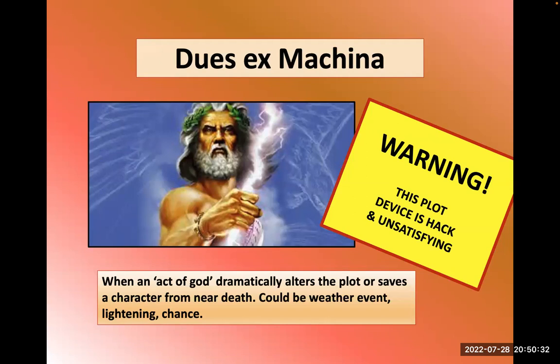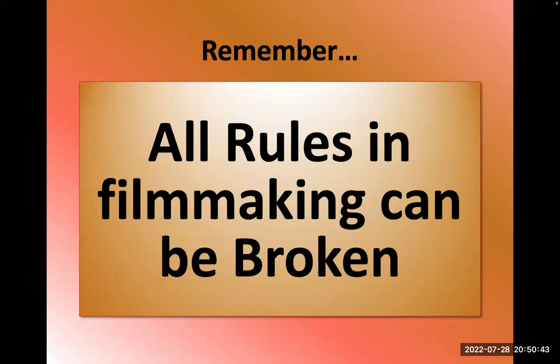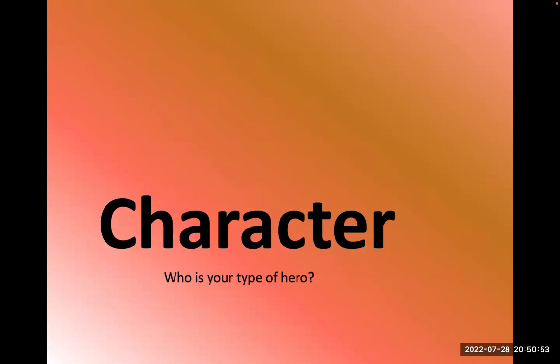Another example is the deus ex machina — when an act of god dramatically alters the plot or saves a character from death. This feels very unsatisfying to the audience. All rules can be broken, but these are the things that typically get criticized.